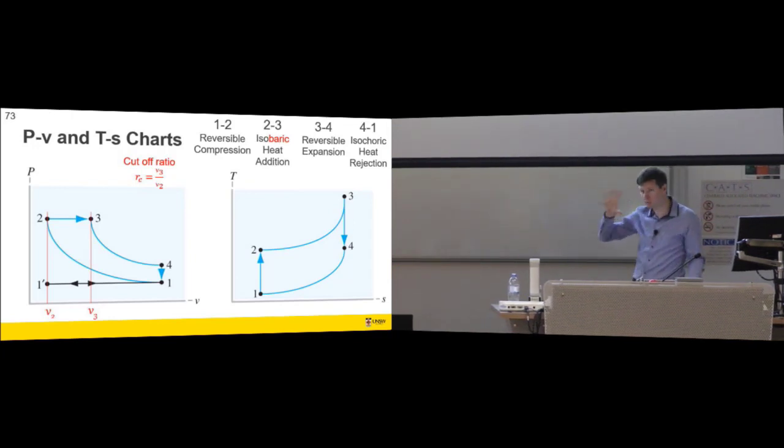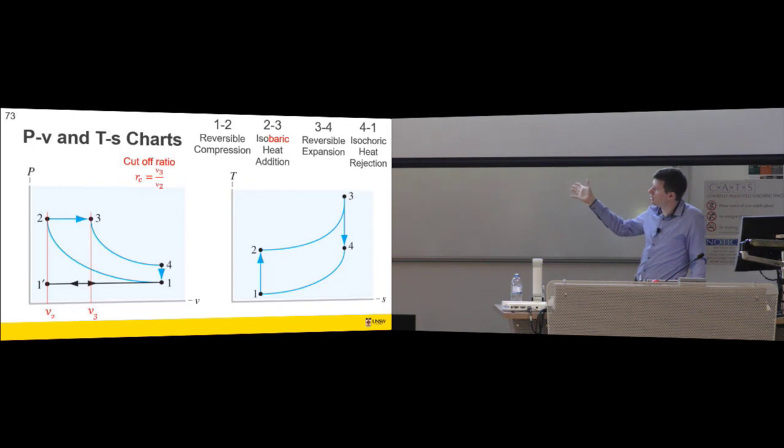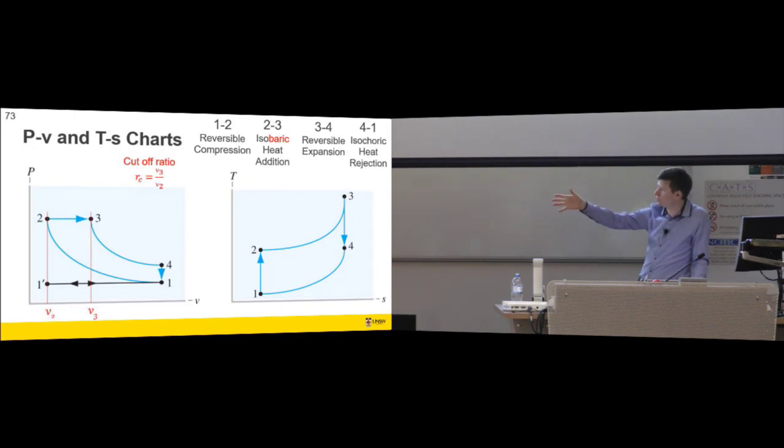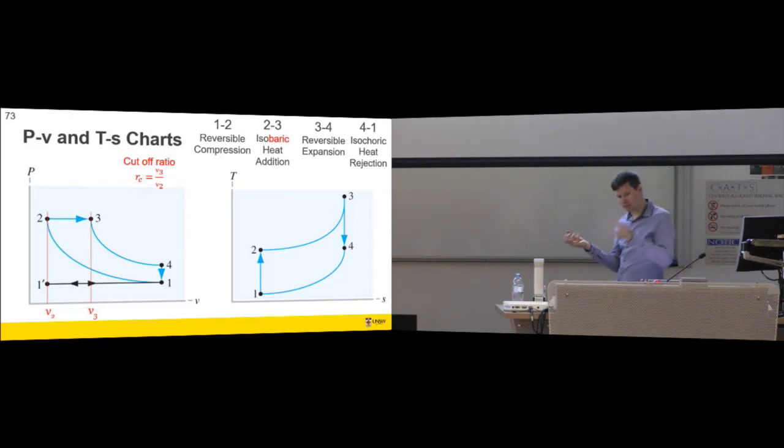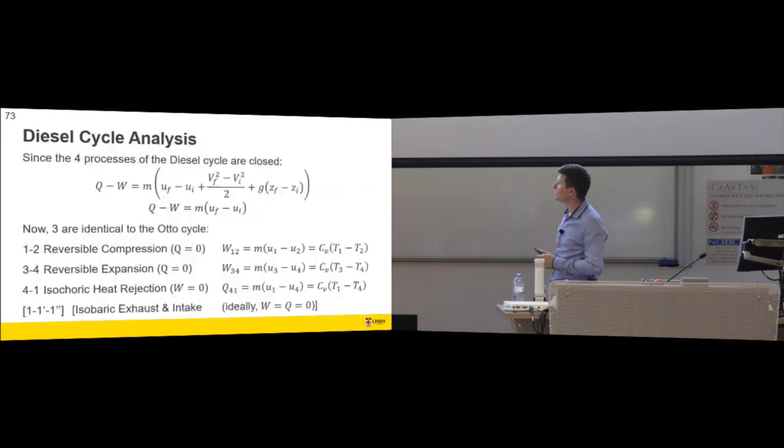If our pressure doesn't change, then we need something to define for us the length of this line, and so that becomes our cutoff ratio. So, specific volume 3, or volume 3, depending on which one you calculated, divided by volume 2. So, volume at state point 3 divided by volume at state point 2. And this is representative of how long you're injecting the diesel for. So the longer this line, the more diesel you're injecting for the cycle, the shorter the line, the less you're doing.